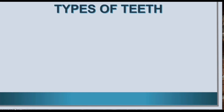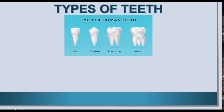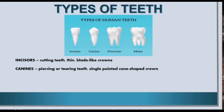Now let us know about the types of teeth. There are four types of human teeth. First is incisors. Incisors are the cutting teeth — they are thin and they have blade-like edges. Second is canines. Canines are the piercing or tearing teeth.